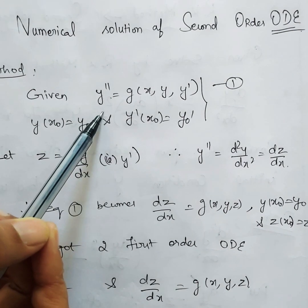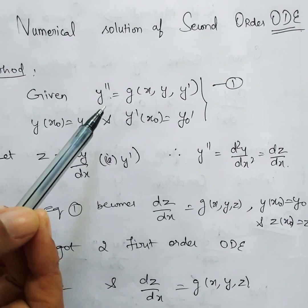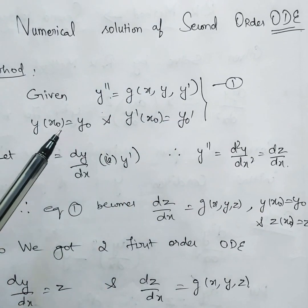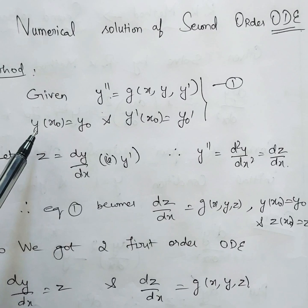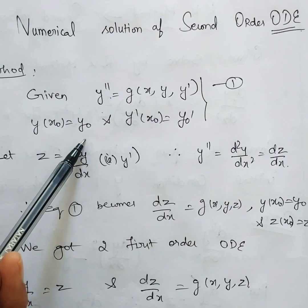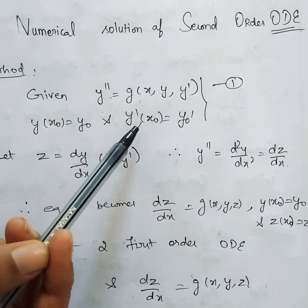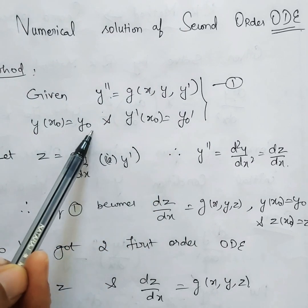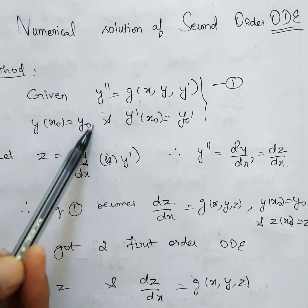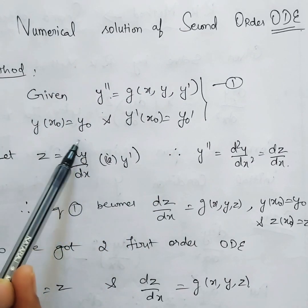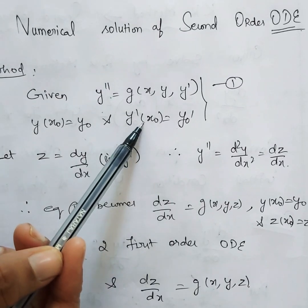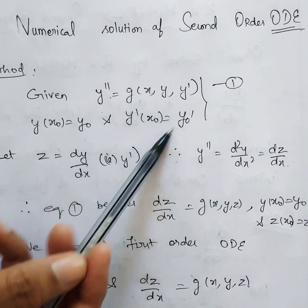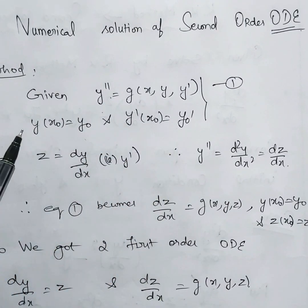Given a second order differential equation, y double dash equals g of x, y, y dash, with the initial conditions: y of x-naught equals y-naught, and y dash of x-naught equals y-naught dash. For first order, we need only the first condition, but now we also need the value of its derivative.